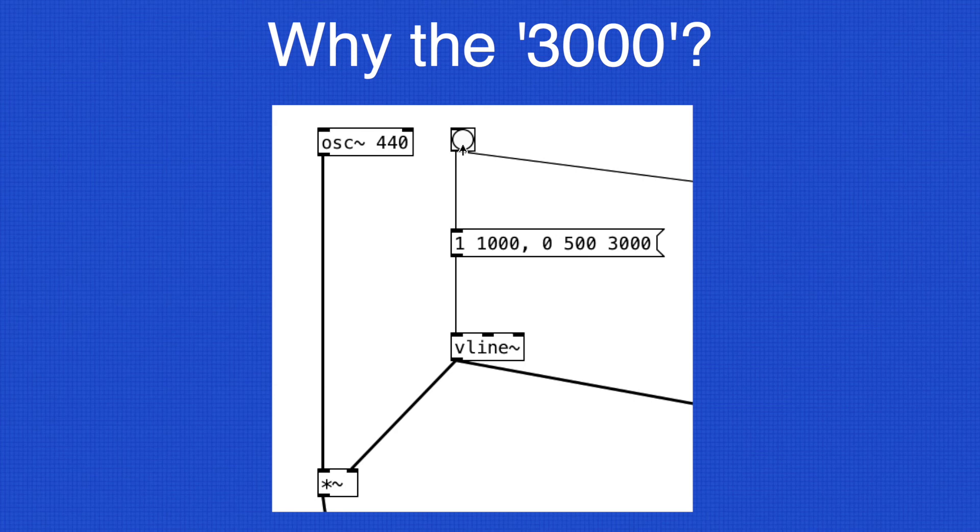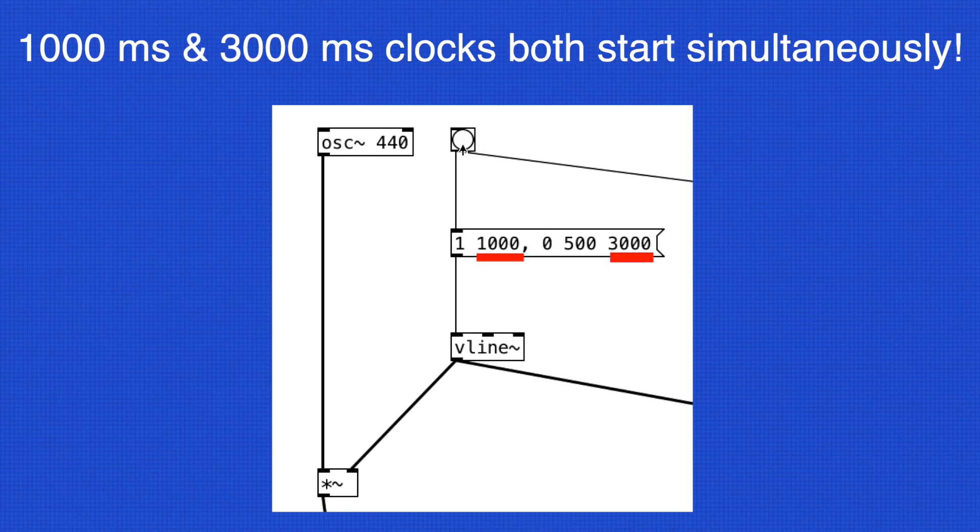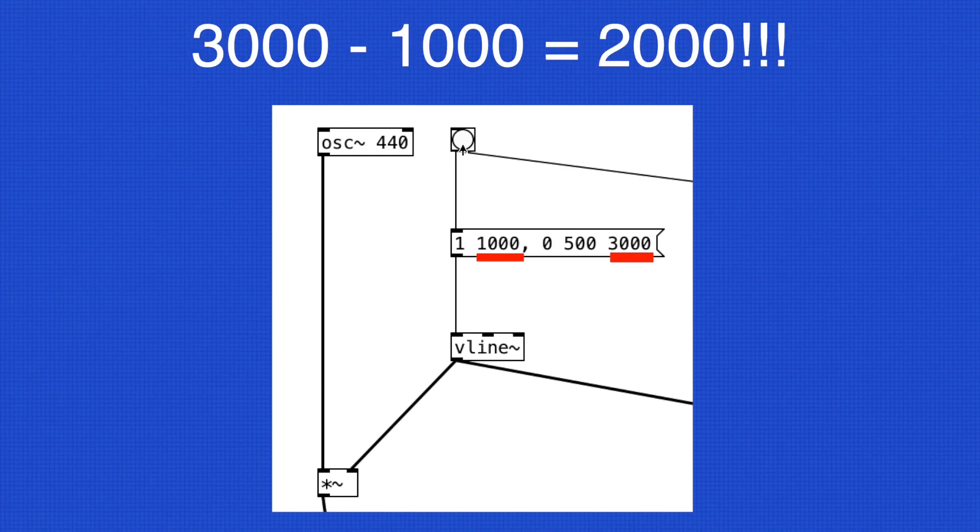But it's not that 1.0 is sustained for 3,000 milliseconds after the envelope goes from 0.0 to 1.0. That 3,000 millisecond clock actually starts simultaneously as the 1,000 millisecond attack time. 3,000 minus 1,000 is 2,000. So that's the actual sustain time duration.